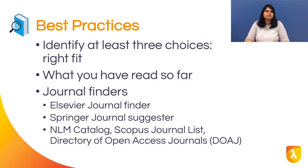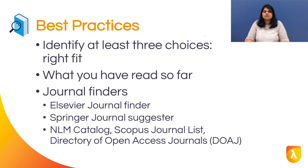Identify a minimum of three journals that are good fits for your work and your goals. Having backups will make resubmissions easier in case the work is not accepted by your first choice. Start with what you have read — you may already have a collection of literature as background for your research, and these journals may be most suitable for publication of your work.